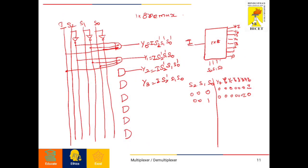Similarly, for a 1x8 demultiplexer, we will have a single input and 8 outputs, and we will have three select lines because of the formula 2 power 3. Similar to the 1x4 demultiplexer, one more select line will be multiplied with all the output equations, and the single input I will also be multiplied with all the equations. We will get a single input and 8-output demultiplexer. Hope you understand what is a demultiplexer. Thank you.